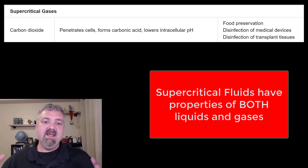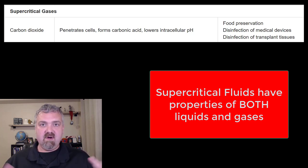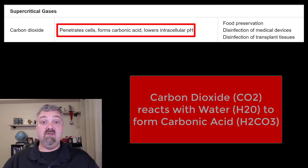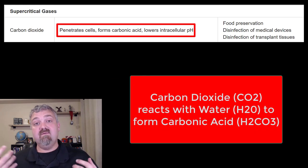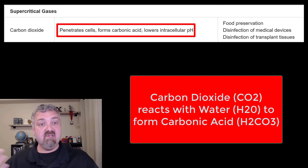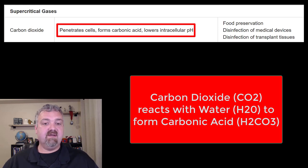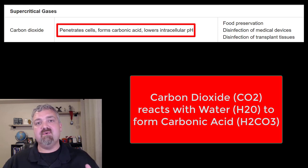The reason this works so well is that you have a chamber full of this supercritical carbon dioxide. It can penetrate cells really, really well, and then just like it would in your bloodstream, it'll form carbonic acid, which will lower the pH and can be used to disinfect medical devices, transplanted tissues, or tissues for transplant, foods, etc. So that is your supercritical gases or supercritical fluids.